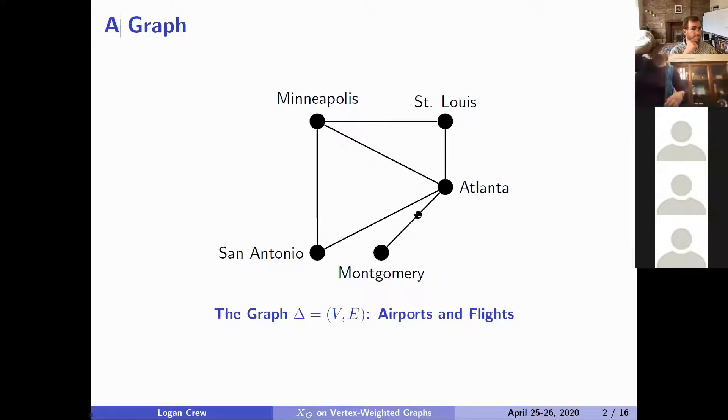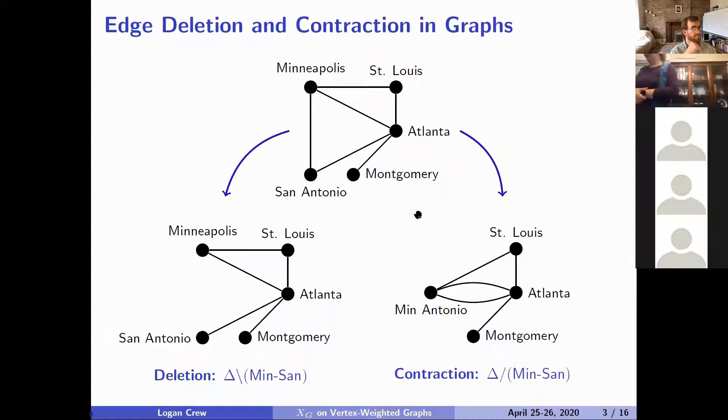If we're gonna be doing edge deletion contraction, let me briefly explain to you what exactly that means. If we start with this edge between Minneapolis and San Antonio, we could just delete it, just remove it from the graph. That's pretty straightforward. It's usually denoted by this backslash.